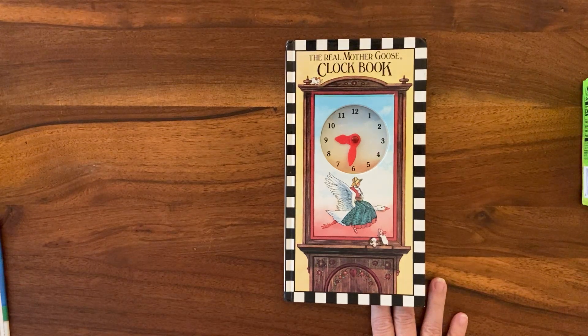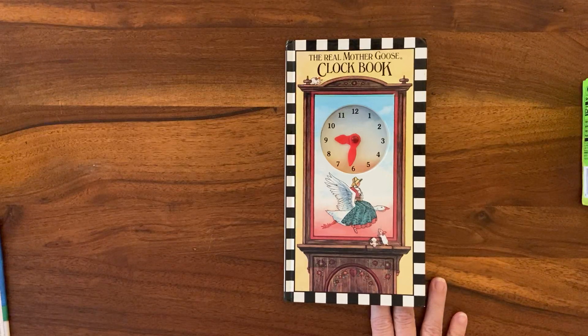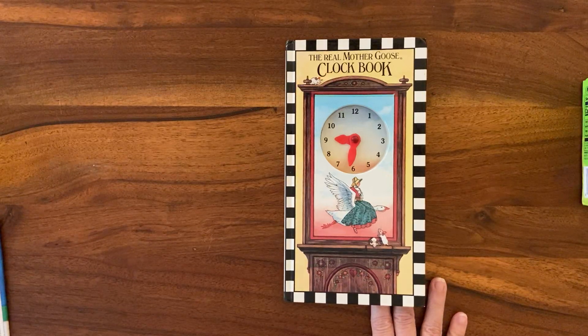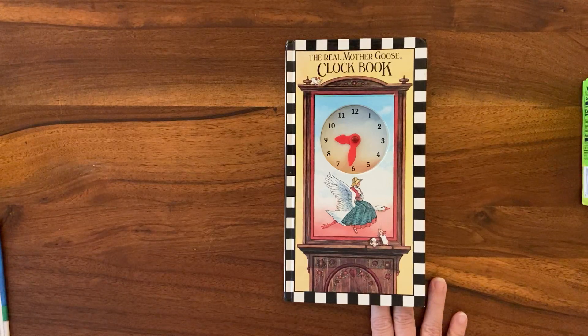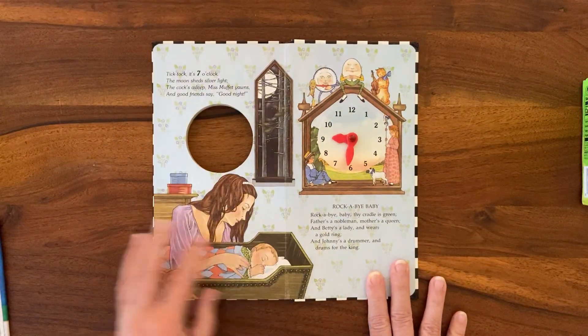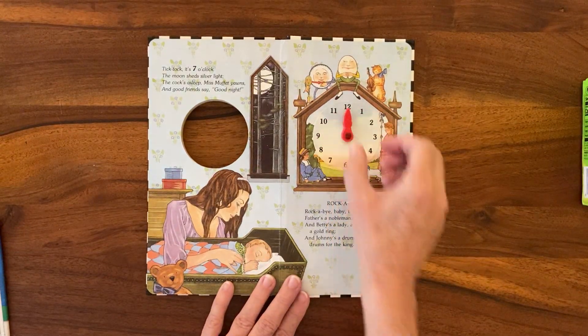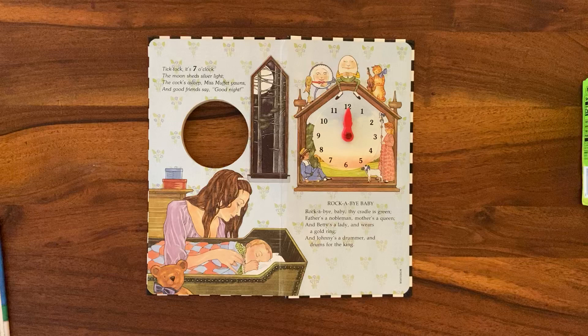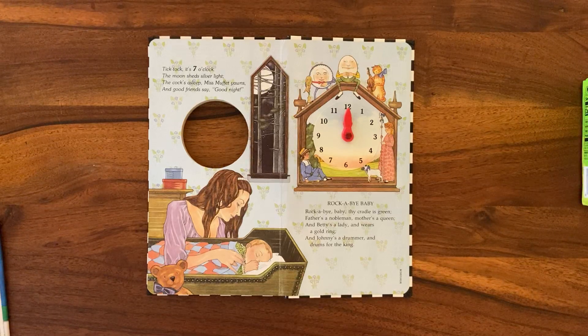This is the Real Mother Goose Clock Book. It's lesson 90, and they're talking about measuring turns and hands on a clock. Let's open it up and find our clock. We'll start at 12 o'clock and they want to know first how many degrees are in a circle.